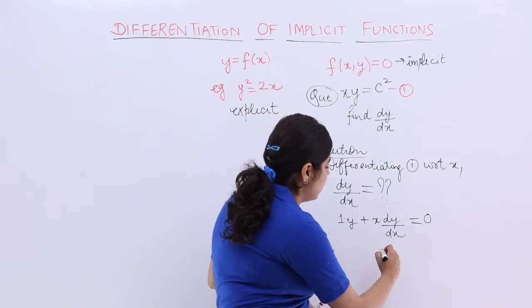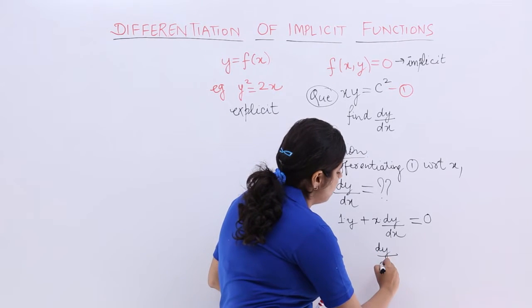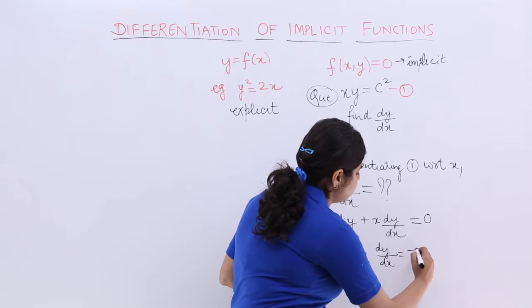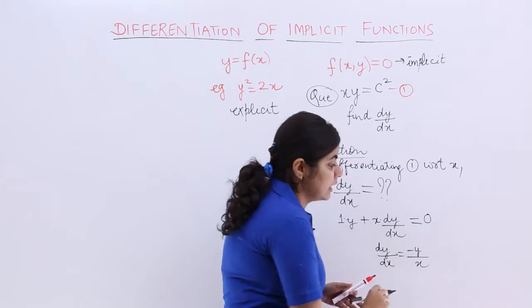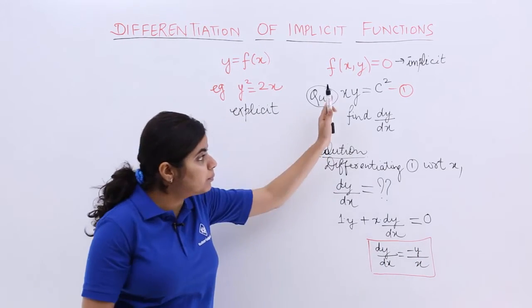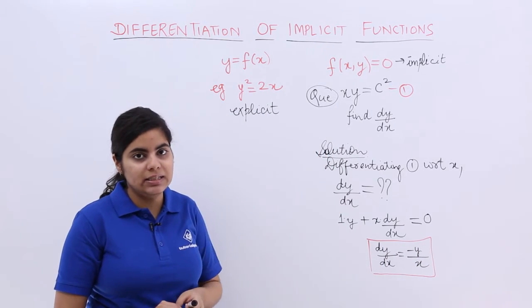Now what is the answer from here? Definitely you need to only find out dy by dx and present it as an answer. So it is minus y upon x. That is the answer. This type of questions can be solved like this.